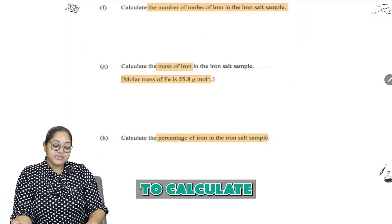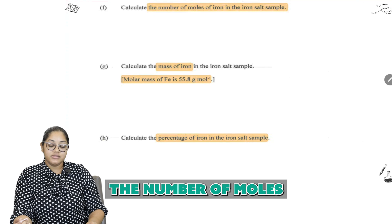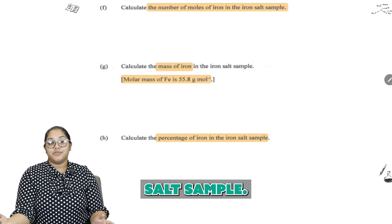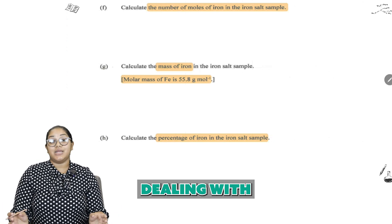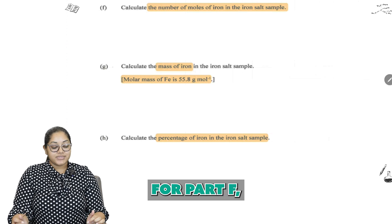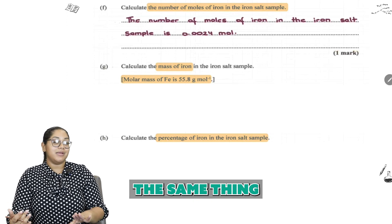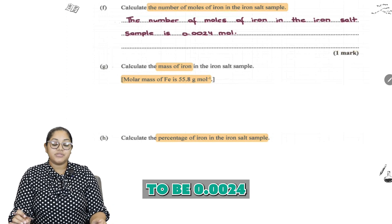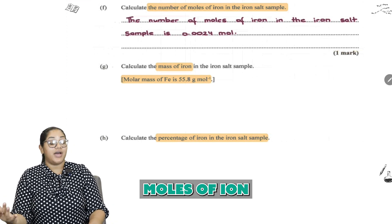So next here we need to calculate the number of moles of iron in the iron salt sample. Remember for this question we are just dealing with an iron sample. But actually for part F, the answer is going to be the same thing as part E. So it is still going to be 0.0024 moles of iron.